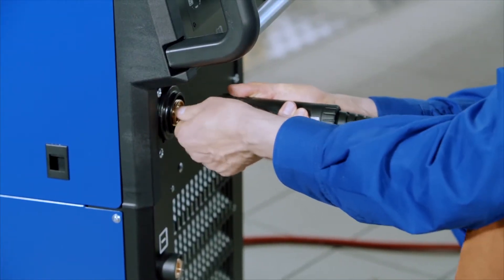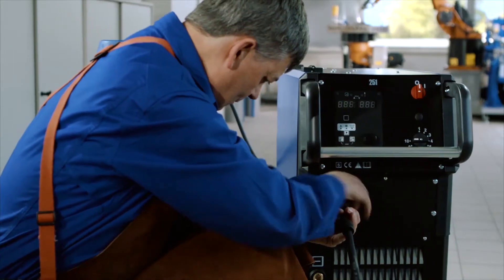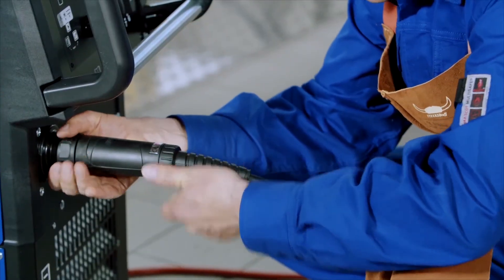Once you have connected the hose assembly to the main connection point and tightened the coupling nut, connect the ground cable.